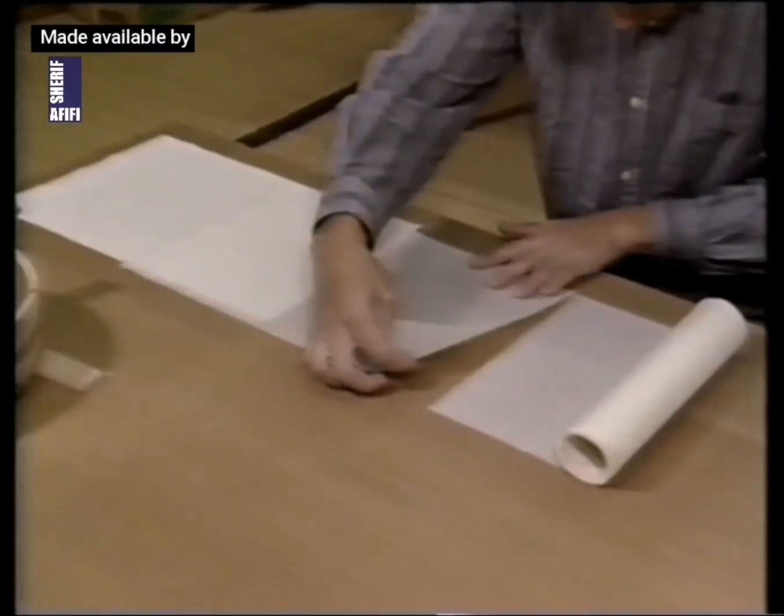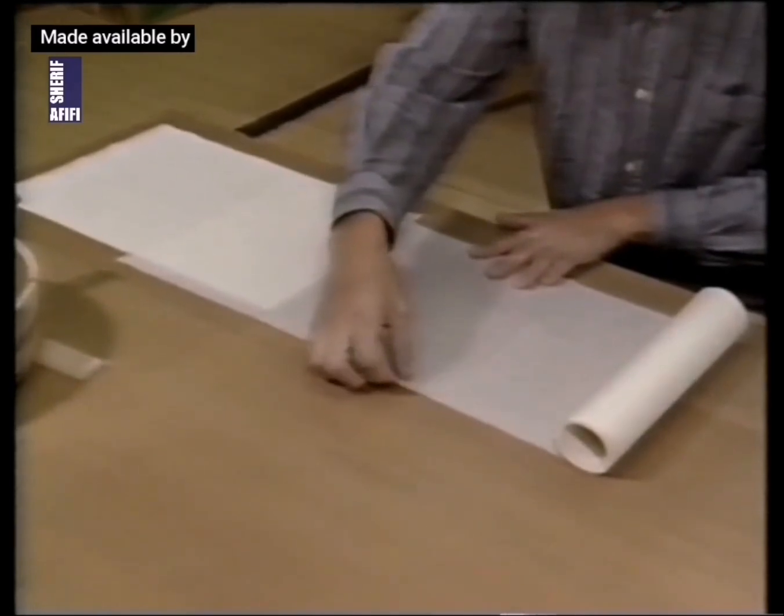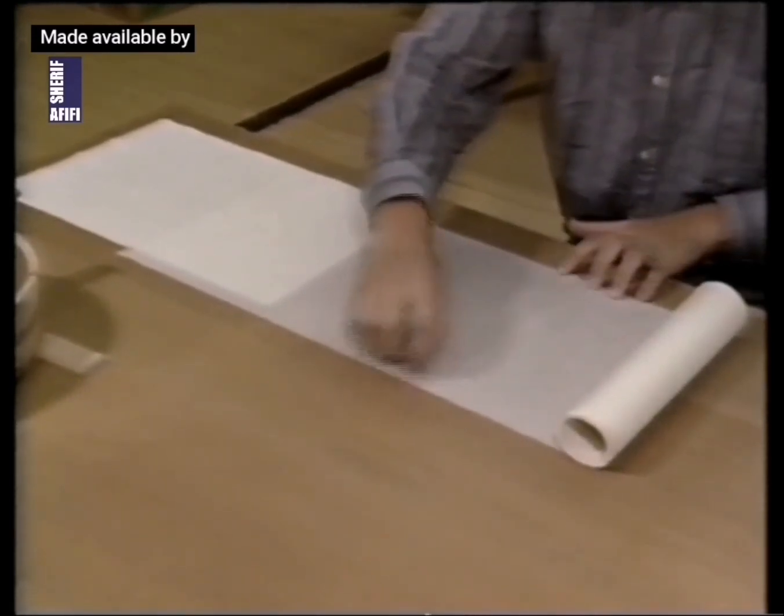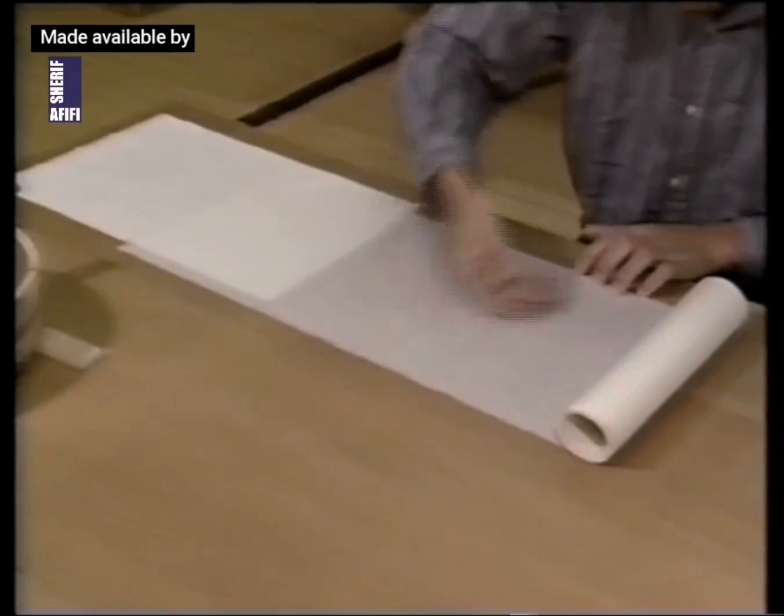Japanese paper is usually molded in predetermined size. Joining techniques are needed to assemble larger sheets.